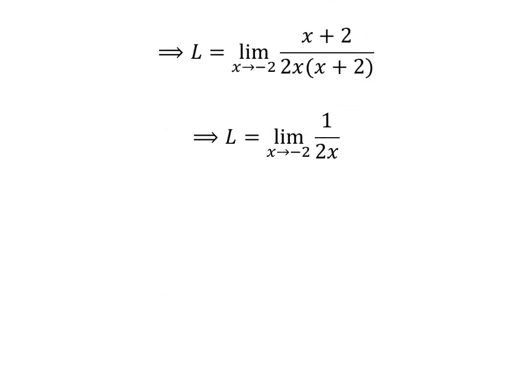Now, let us cancel out the common factor x plus 2 in the numerator and the denominator. So the limit L is equal to limit of 1 upon 2 times x as x approaches minus 2.